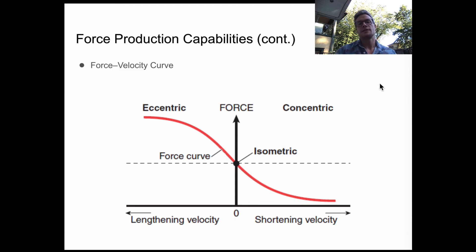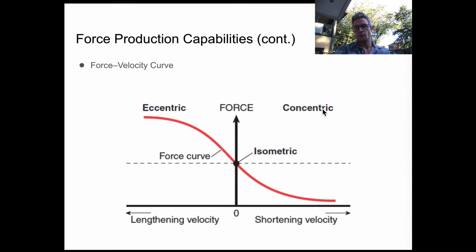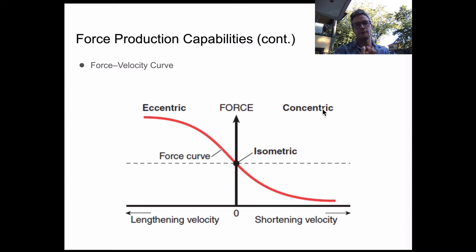This makes sense if you think about how fast you can do a bicep curl. If you're holding your elbow at 90 degrees and you go to very speedily try to do a bicep contraction, especially if there's some resistance, the higher up you get — or the closer to the shoulder you get in this bicep curl — the less capacity you have to actually contract. Therefore, you're going to produce less force and less velocity behind that.